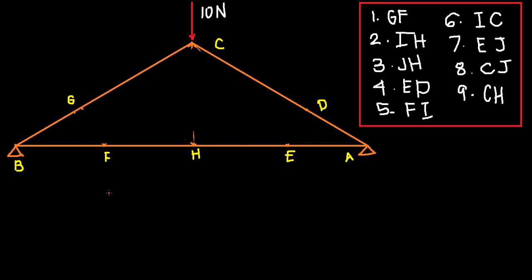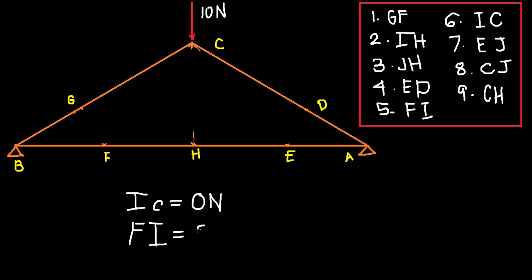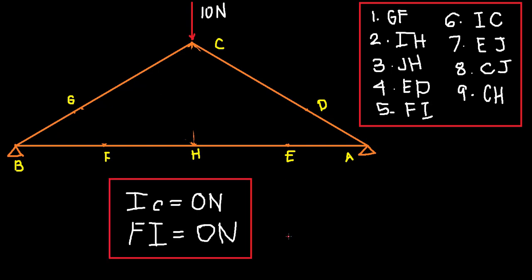To summarize, those are all the zero force members in this problem. For the follow-up questions: since IC is a zero force member, the magnitude of the force in IC is zero Newtons. Similarly, since FI is also a zero force member, the force in FI is also zero Newtons.